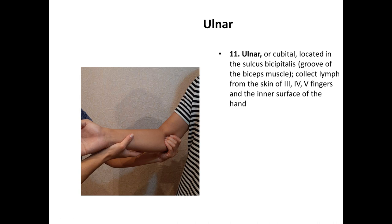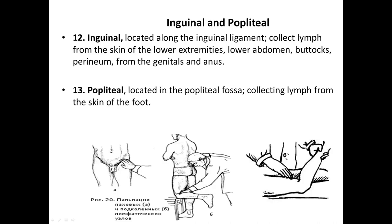Ulnar or cubital lymph nodes are located in the sulcus bicipitalis and collect lymph from the skin of the third, fourth, and fifth fingers and the inner surface of the hand. Here I demonstrate how to correctly palpate these lymph nodes. Inguinal lymph nodes are located along the inguinal ligament, and popliteal lymph nodes are located in the popliteal fossa. Here are the methods of palpation for these nodes.